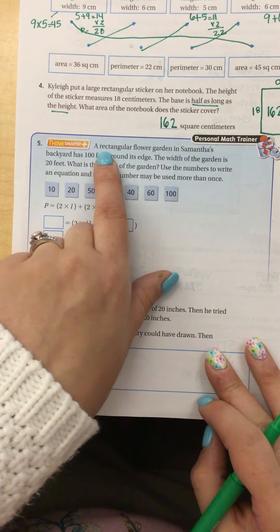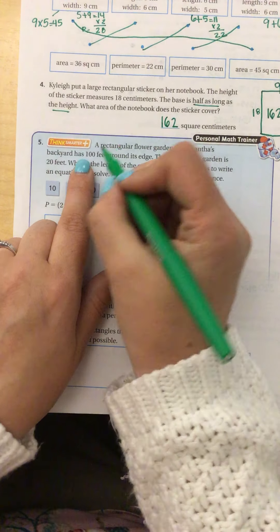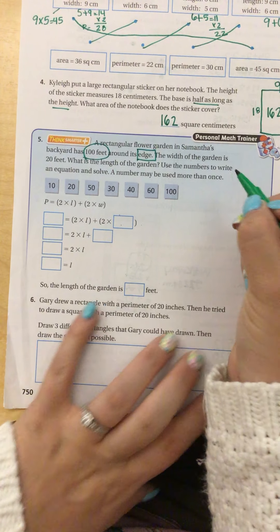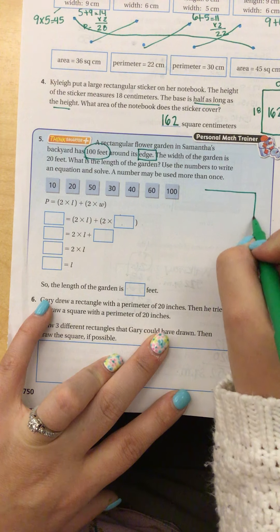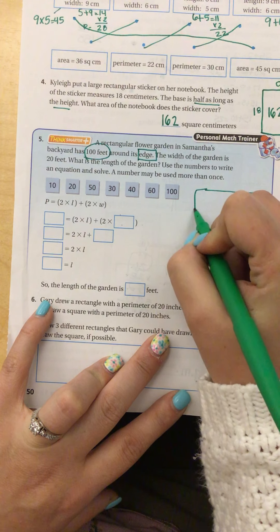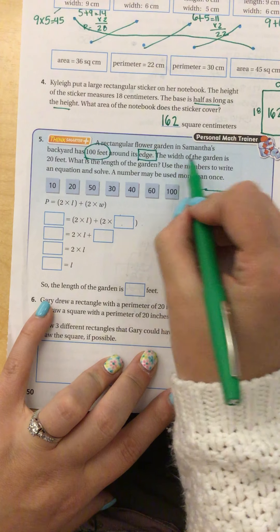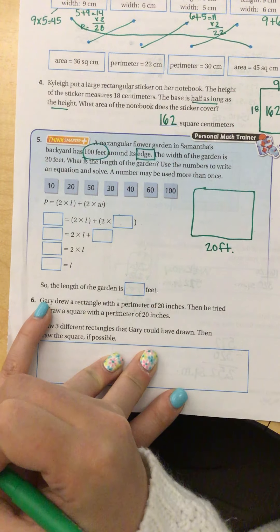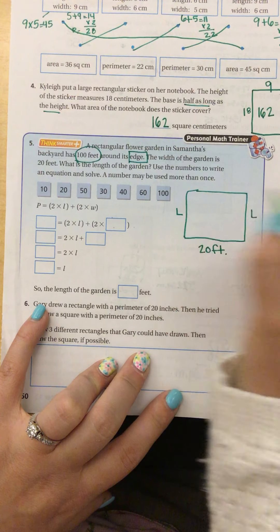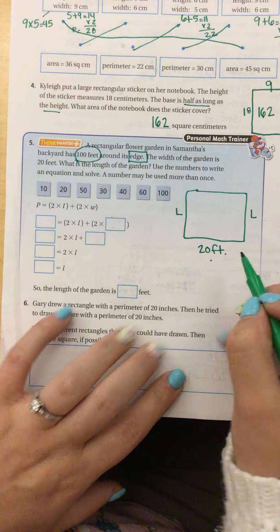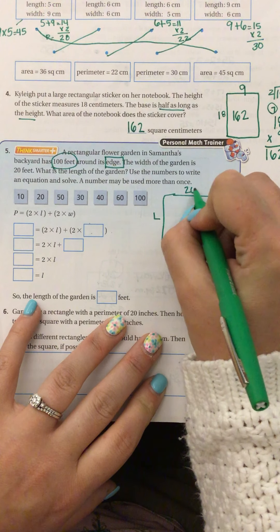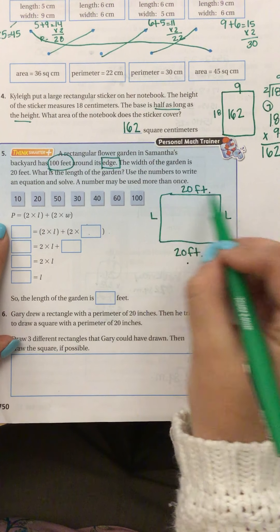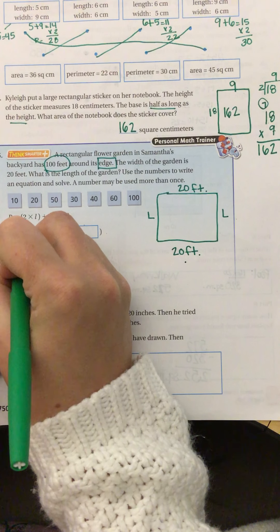Okay, next question. A rectangular flower garden in Samantha's backyard has 100 feet around its edge. The edge gives us a clue that that's perimeter. So I'm going to go ahead and draw my rectangular flower garden. The width of the garden is 20 feet. What is the length? So I don't know what the length is yet. But I know if this is 20, then this one has to be 20 because opposite sides are equal in a rectangle.